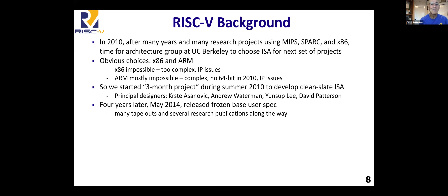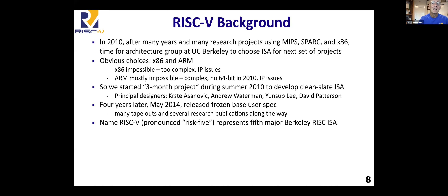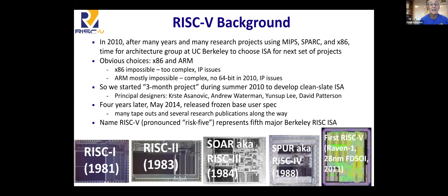It took four years, not three months, because they took it very seriously and did a really good job before freezing it. Along the way they built many chips, so the instruction set could be flexible while you built several of them — seeing what was hard and easy, building the software stack, learning what worked and what didn't. After four years, they said okay, that's good enough, we can freeze that and use it forever. It's called RISC-V because it's the fifth major project at Berkeley — I led four of them in the 1980s, and to honor those projects they decided to call it RISC-V.